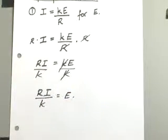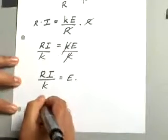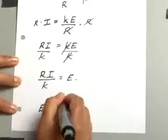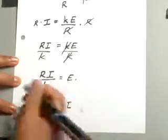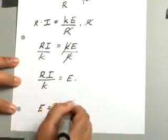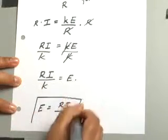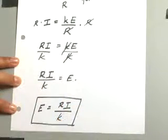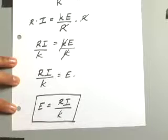And that's all you have to do when they say solve for E. So your answer will be E equals R I, or if you want to write I R, doesn't matter, over K. This will be the answer that we're looking for.